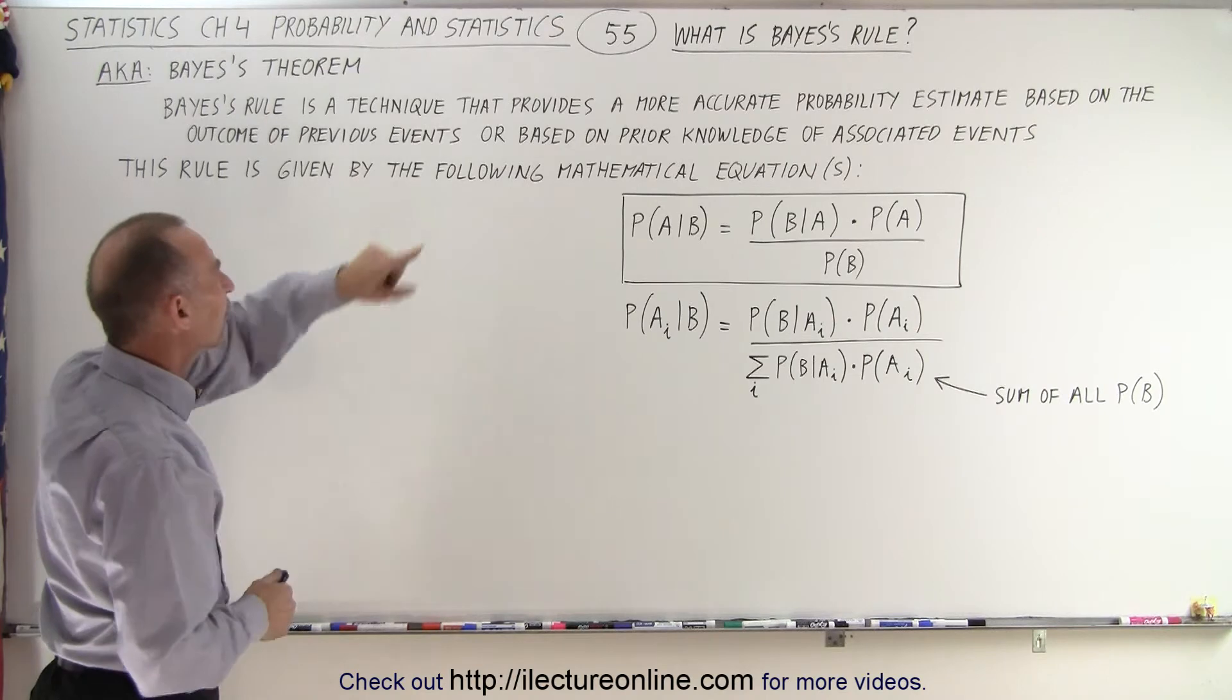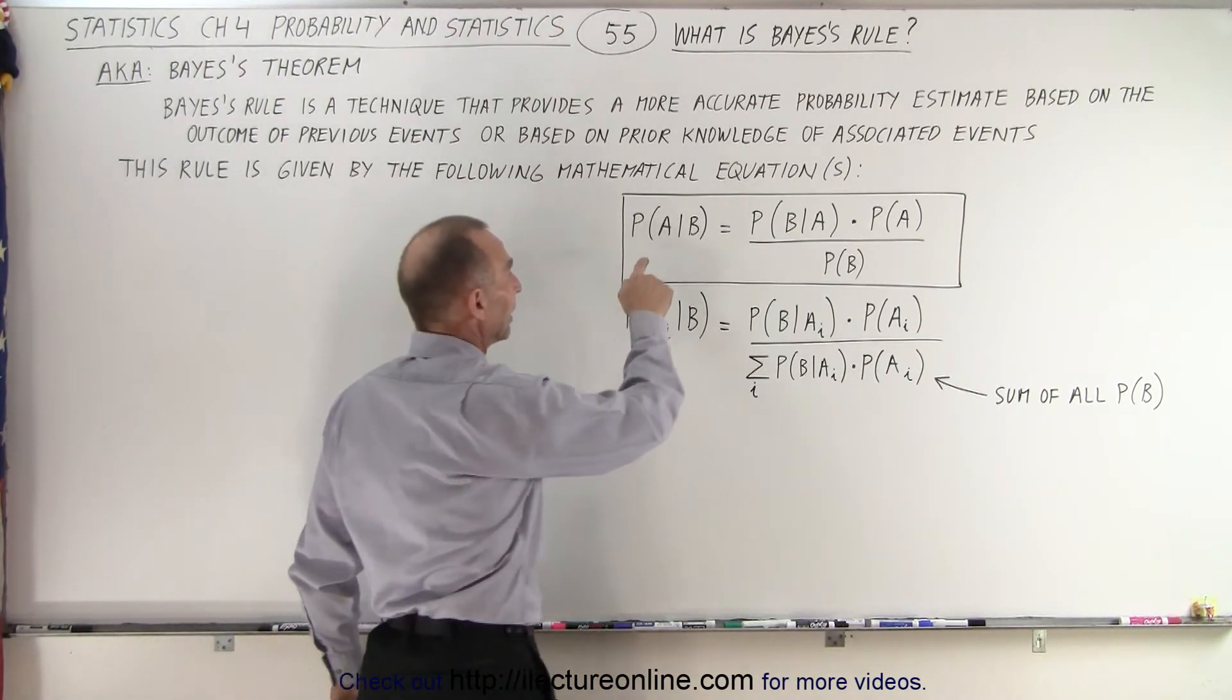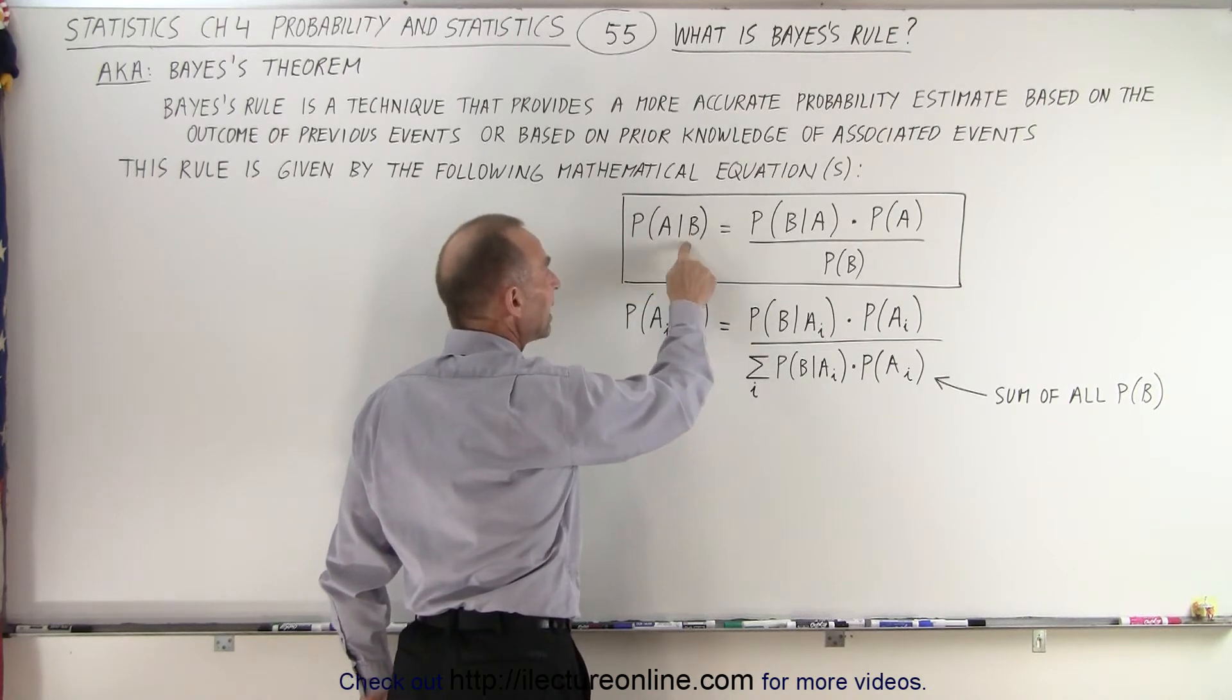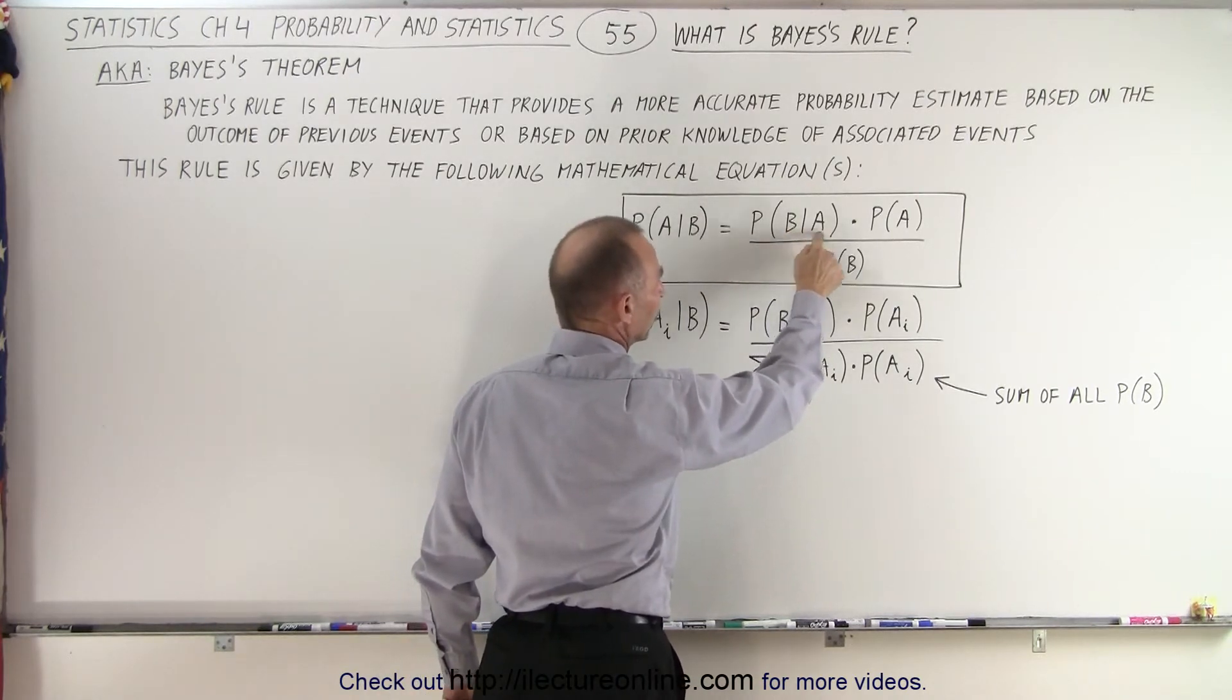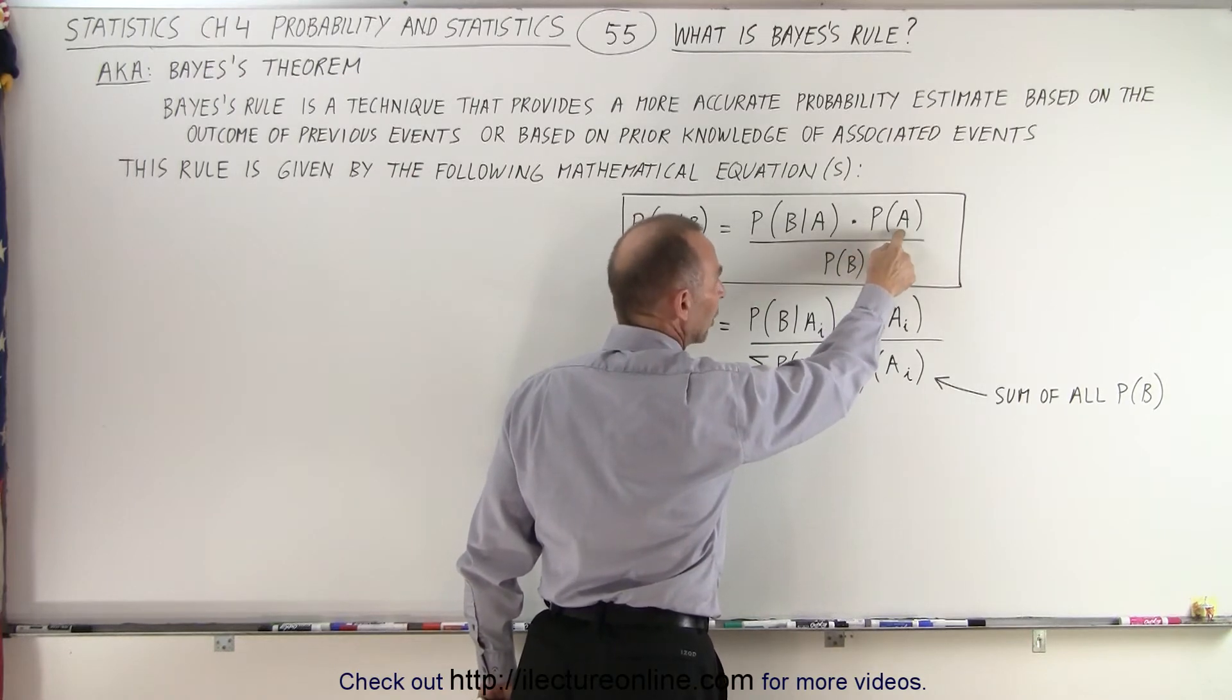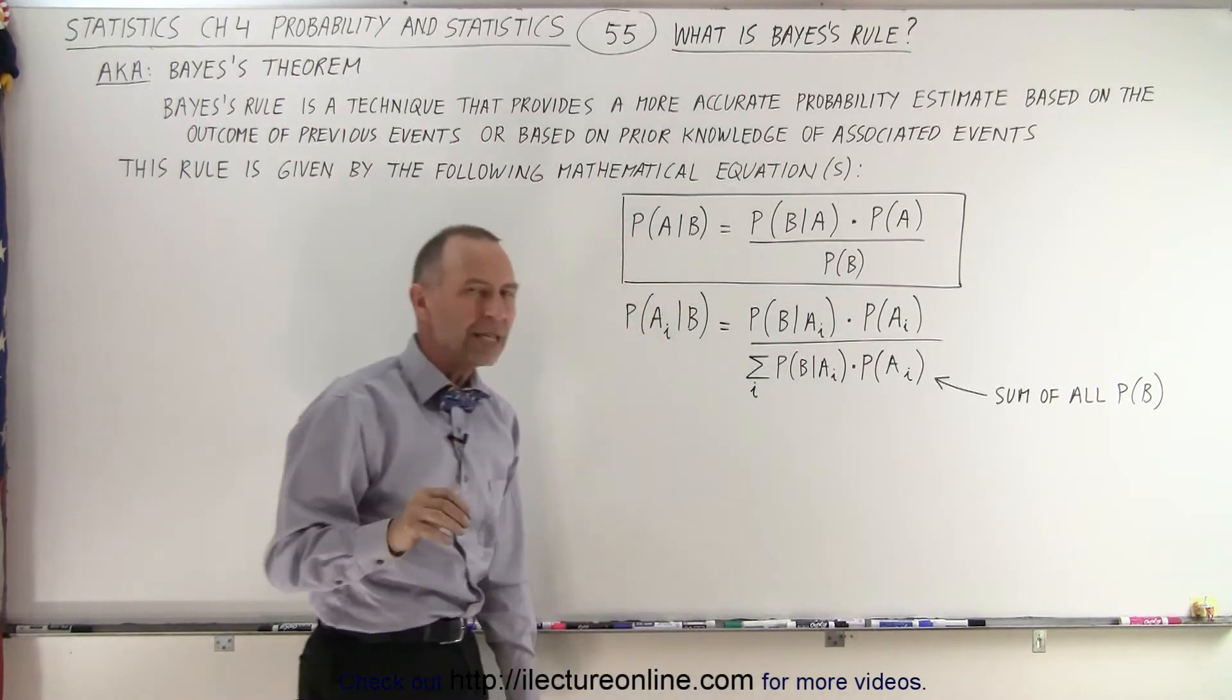This rule is given by the following mathematical equation. Notice that it is the probability that A will occur given that B has occurred, which is equal to the probability that B will occur given that A has occurred, times the probability that A will occur, divided by the probability that B will occur.